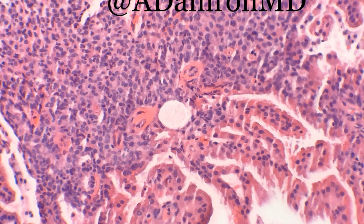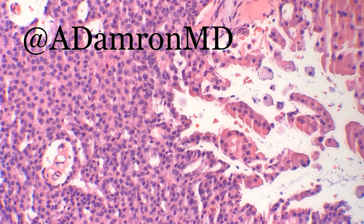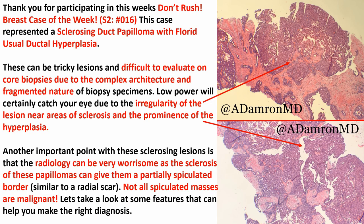What this lesion represented was a sclerosing duct papilloma with florid usual ductal hyperplasia. These can be very difficult to evaluate on core biopsy due to the complex and fragmented nature of a biopsy — papillary fragments can be out by themselves without orientation in the stroma. The irregularity in the areas of sclerosis with that prominent hyperplasia is really going to catch your eye and get you worried. But it's also important to compare the radiologic findings to what you're seeing on biopsy: like a radial scar, sclerosing papillomas can actually look spiculated on imaging.